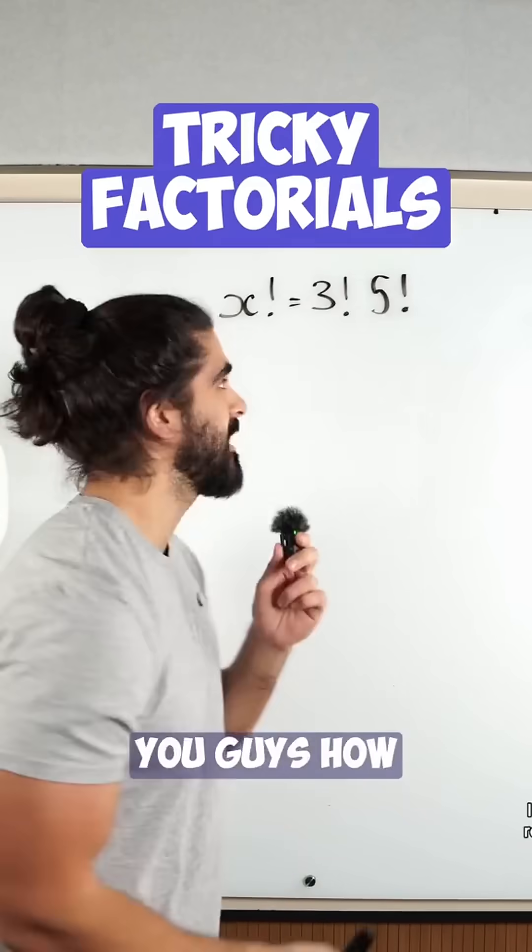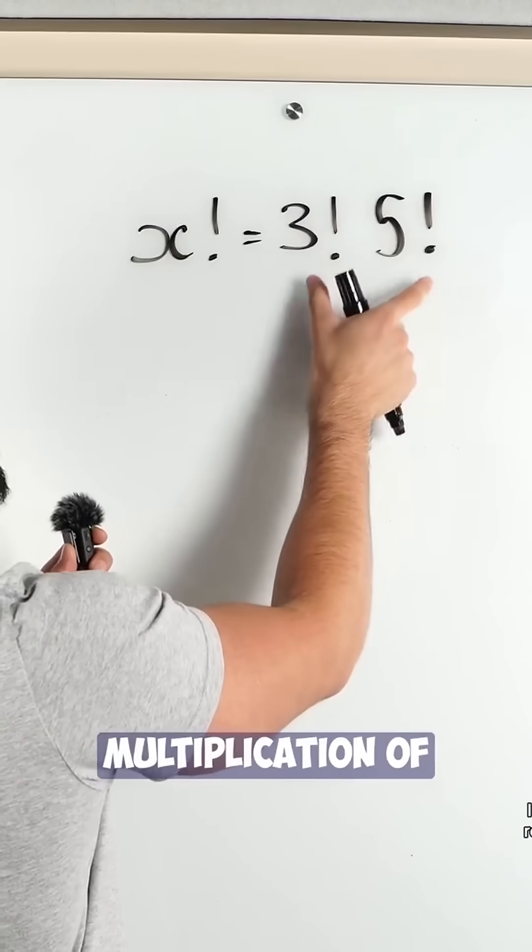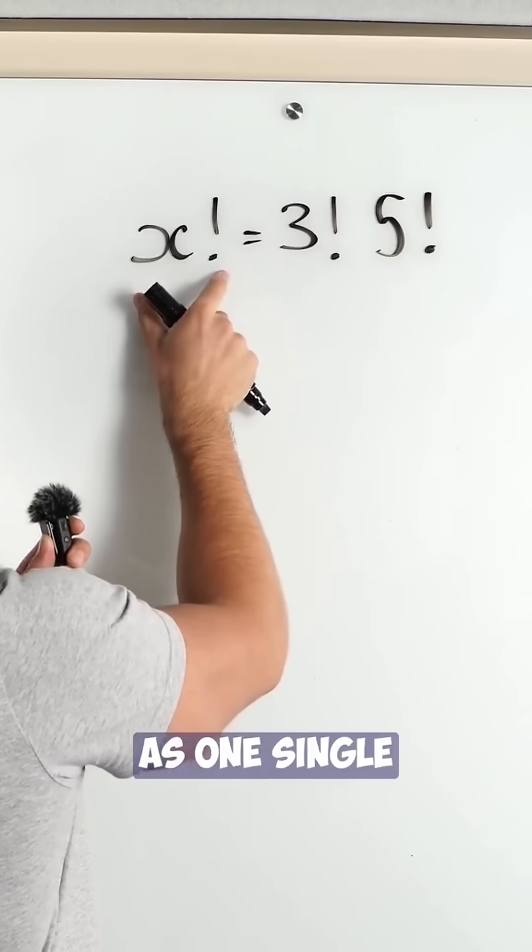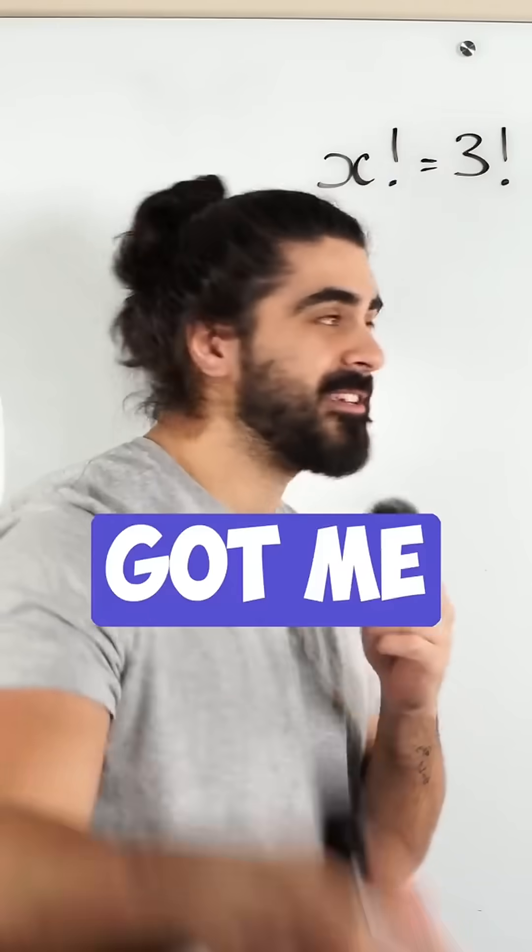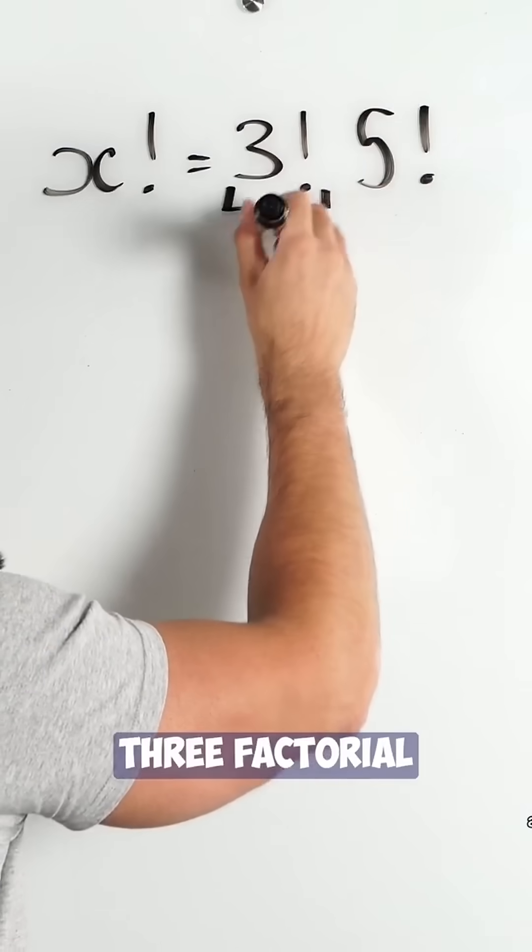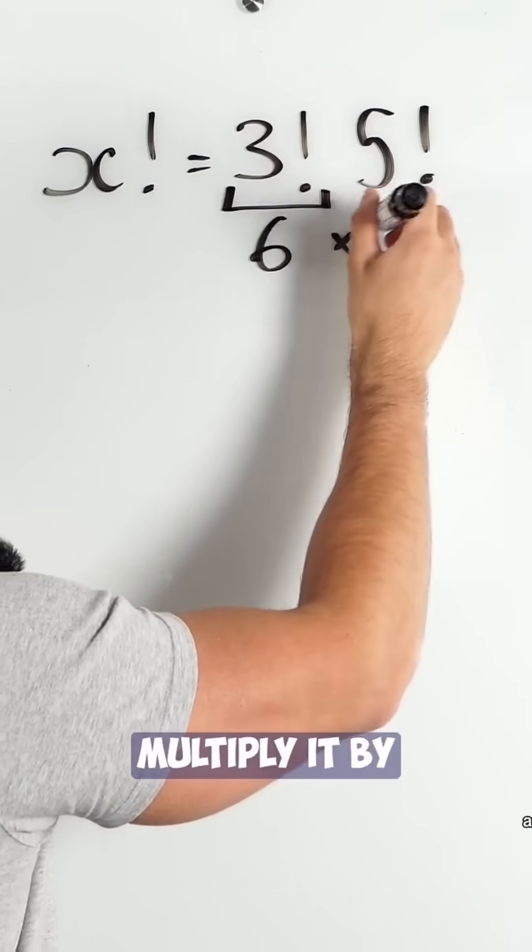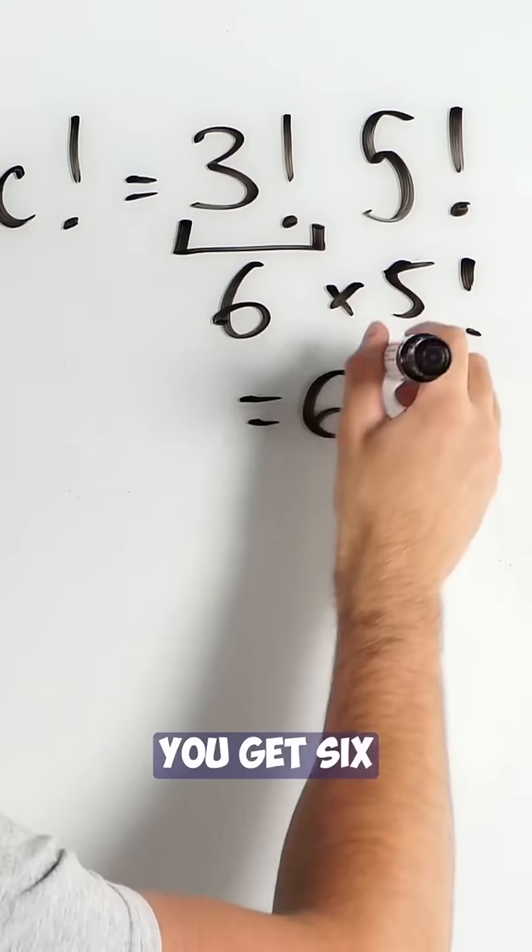In a previous video, I showed you how to rewrite this multiplication of factorials as one single factorial. But you guys got me and figured that 3 factorial is 6, and when you multiply it by 5 factorial, you get 6 factorial.